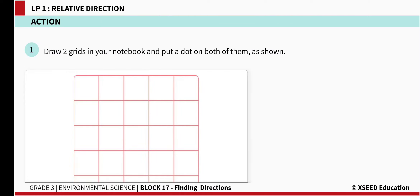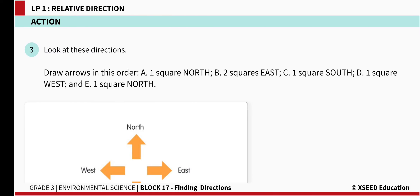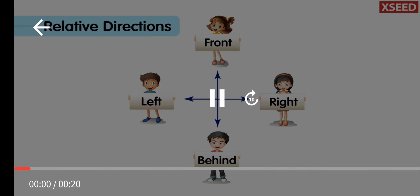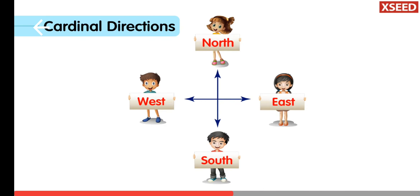Now, write down the four main directions: north, south, east, and west. There are also places left, right, in front, and behind us — these are known as relative directions. We can move north, south, east, and west — these are known as cardinal directions.